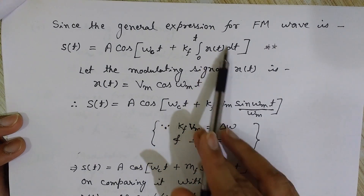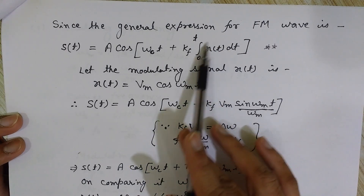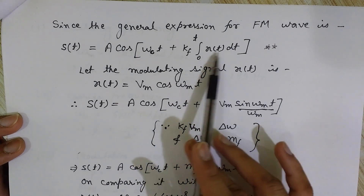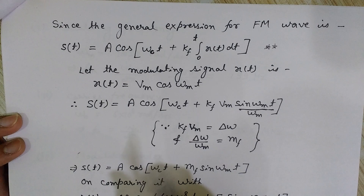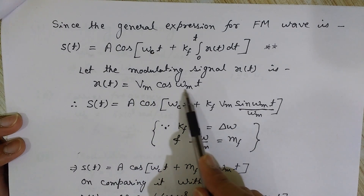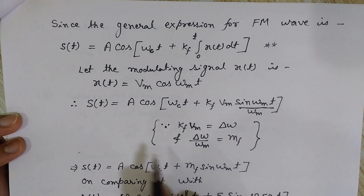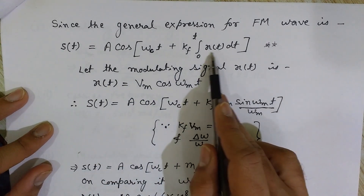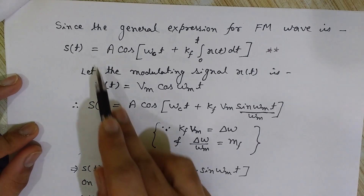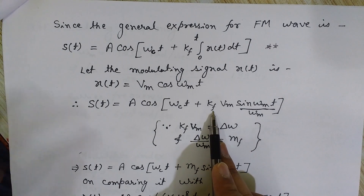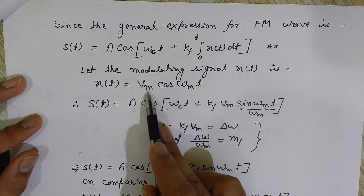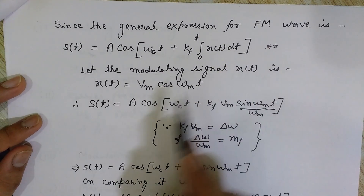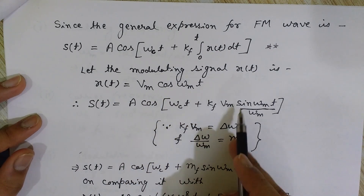Since it is a single tone FM, x(t) contains only one frequency component. Let the modulating signal x(t) = Vm cos(ωmt), where Vm is the maximum amplitude and ωm is the single frequency component. I will substitute this x(t) into the general FM equation. So s(t) = A cos(ωct + kf ∫₀ᵗ Vm cos(ωmt) dt). The integration of Vm cos(ωmt) with respect to t gives Vm sin(ωmt) / ωm.